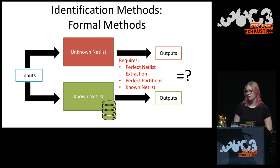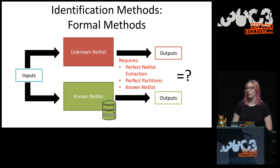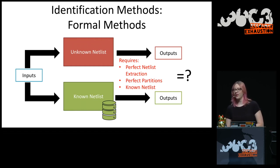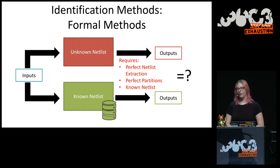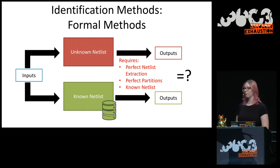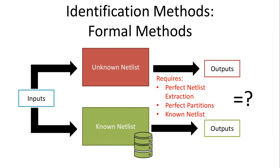We have a couple of problems. We need a perfect functional match, which requires a perfect netlist extraction. While depackaging, delayering, and imaging, you'd better not have any dust on your pictures — you might miss a connection or a gate, and this doesn't work anymore. When you have two million gates, the chances of there being no problems with your image are minuscule. You also need a perfect partition, and you also need a known netlist. You can tell why this stayed in academia and never went out into the real world.